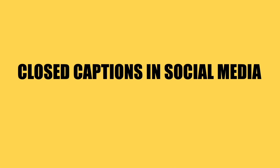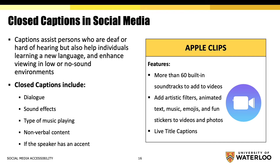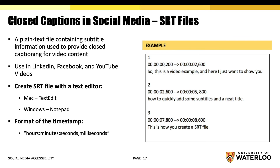Along with alternative text, closed captions in social media are very important for visual content. Closed captions translate dialogue for viewers and can be turned on or off. Unlike subtitles, captions do not assume that the audience can hear music, background sounds, or non-verbal content. For social media platforms with no automatic captioning, consider using Apple Clips, a useful built-in app that includes live title captions that automatically generate as you speak and appear on screen to match the timing of your voiceover, along with multiple simple video editing features. An alternative to automatic closed captioning is SRT files, which contain all the dialogue within video content needed to provide closed captioning. SRT files can be created on built-in apps like TextEdit or Notepad and applied to LinkedIn, Facebook, and YouTube videos.